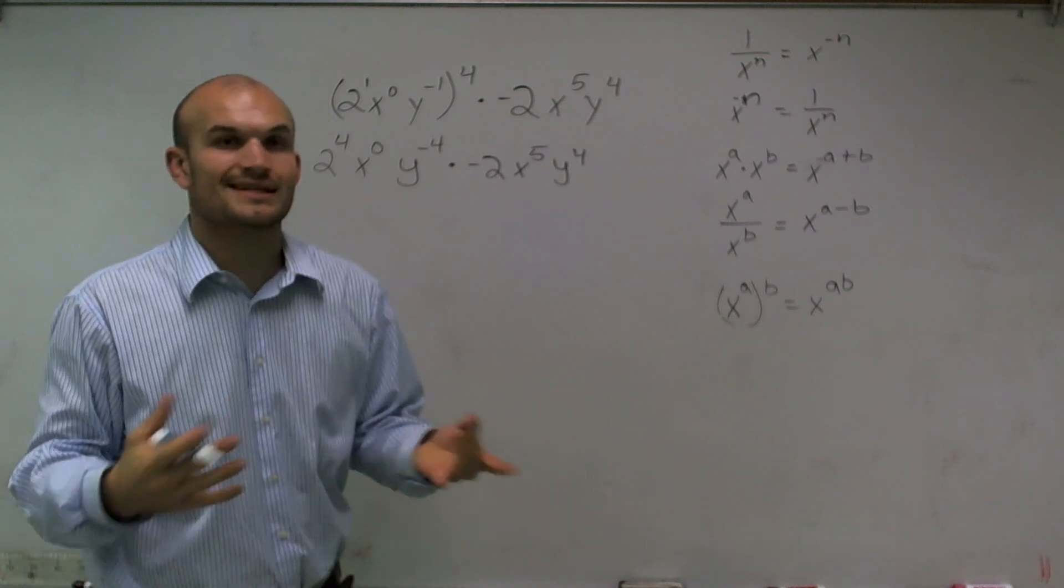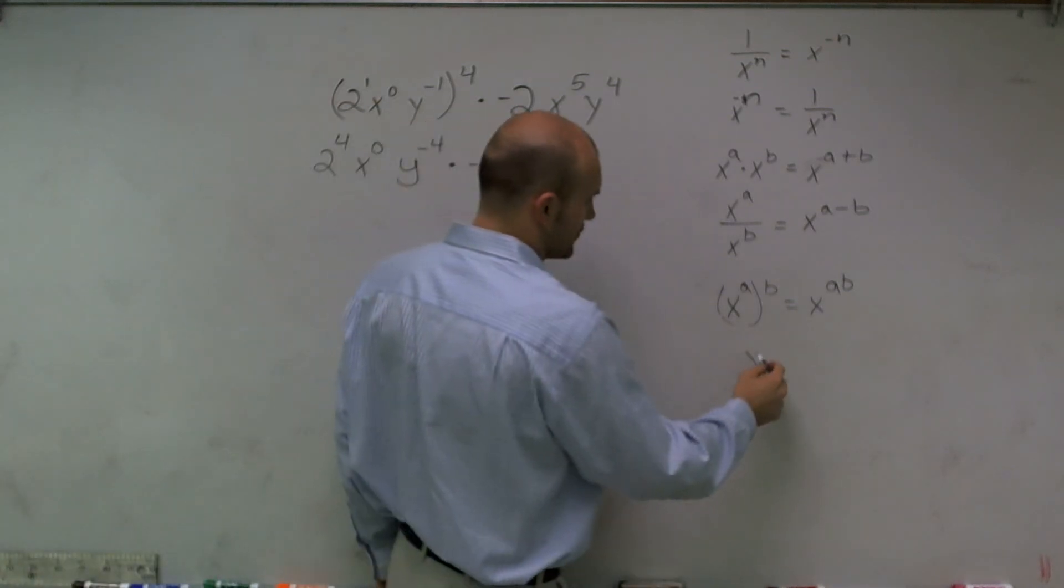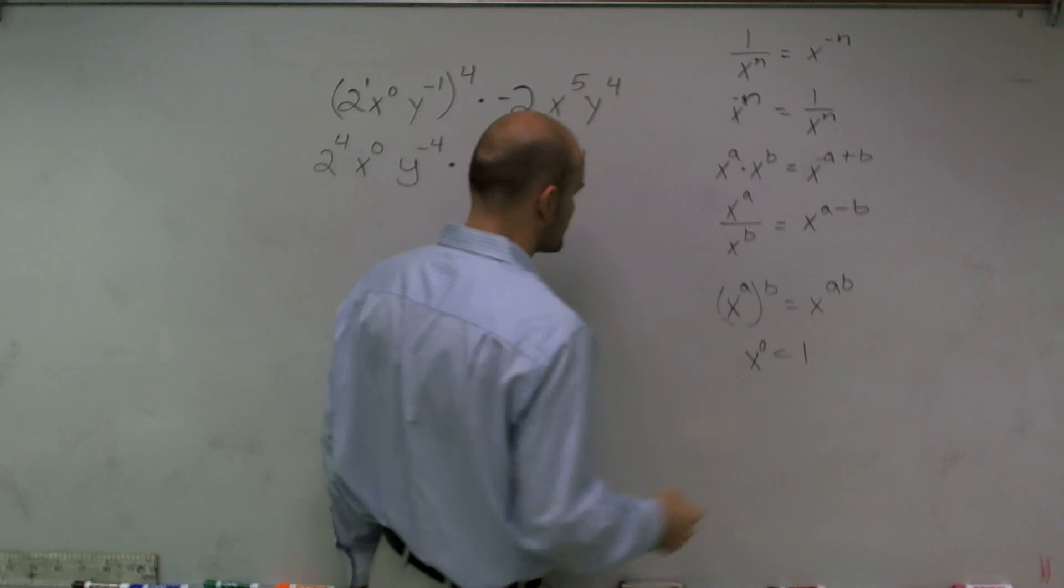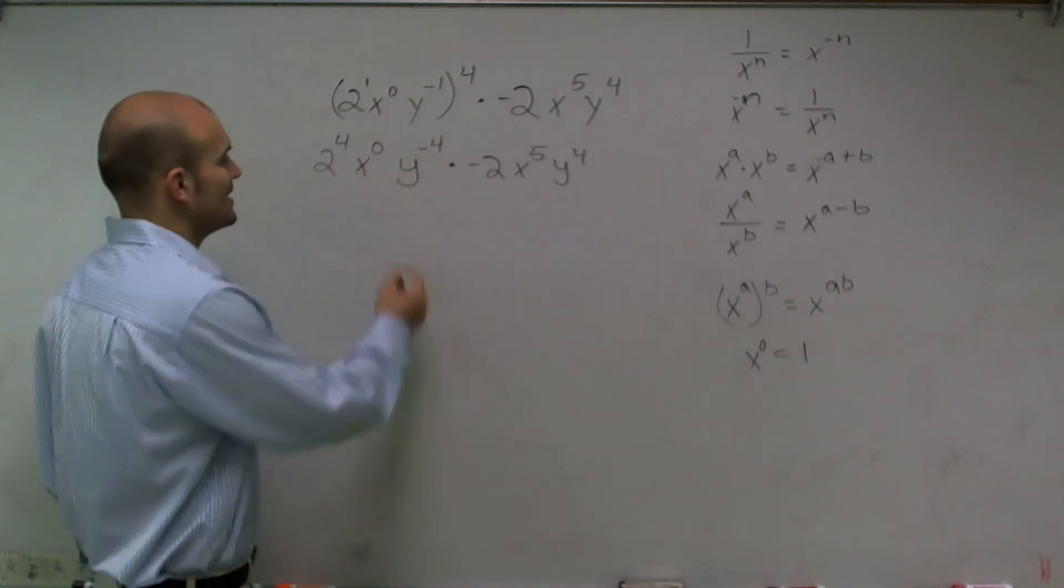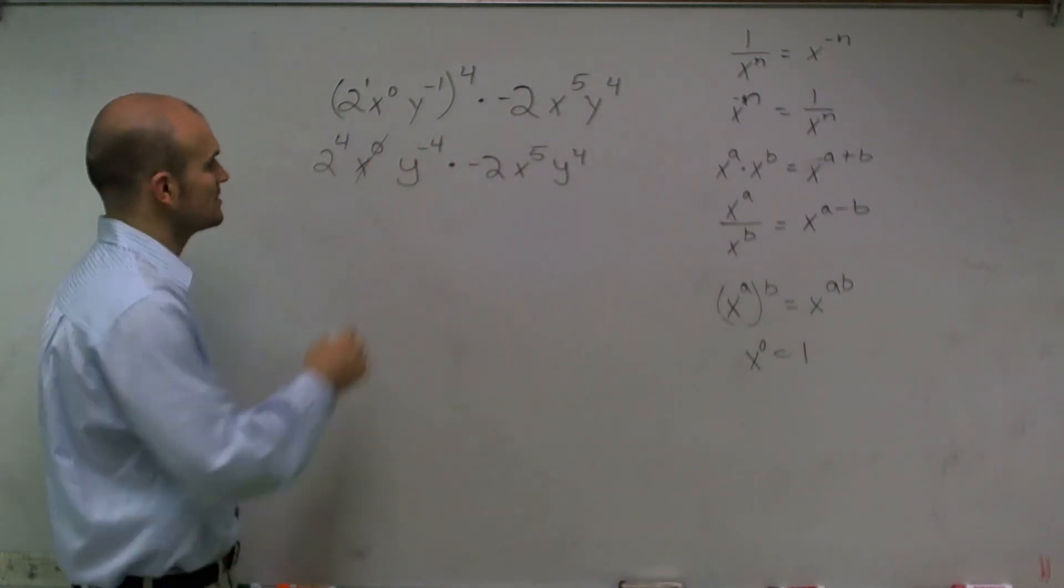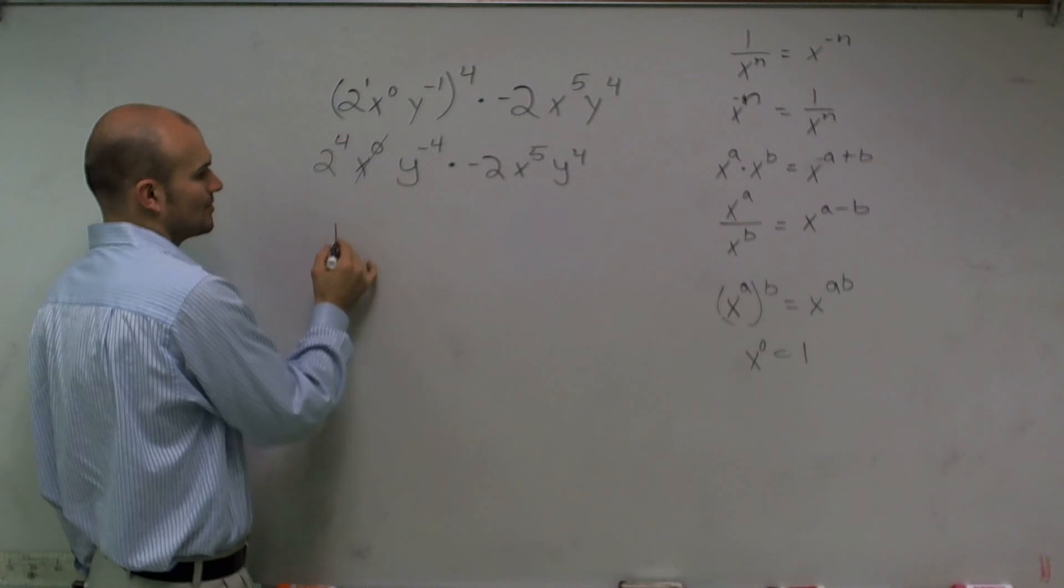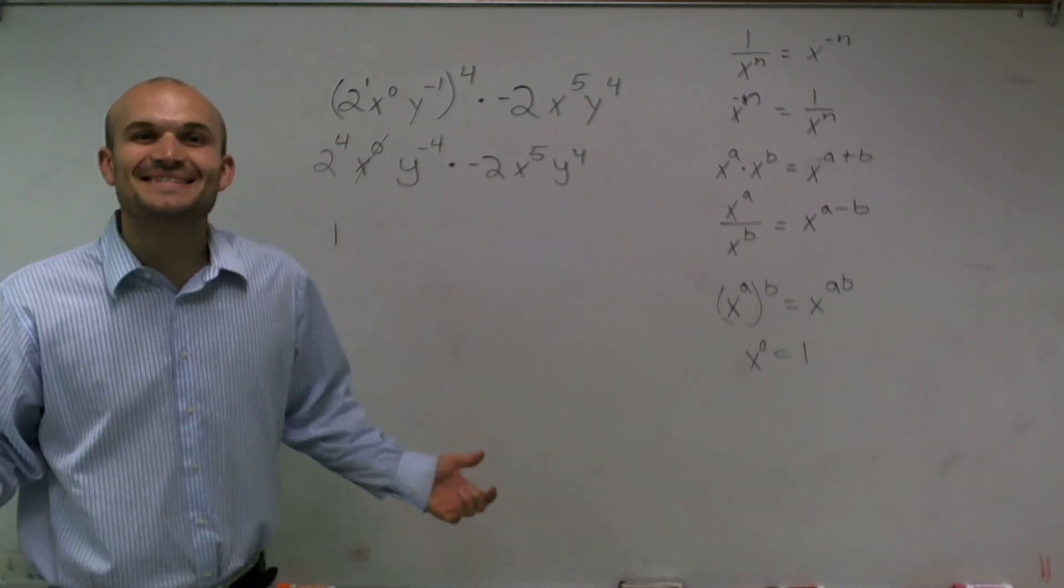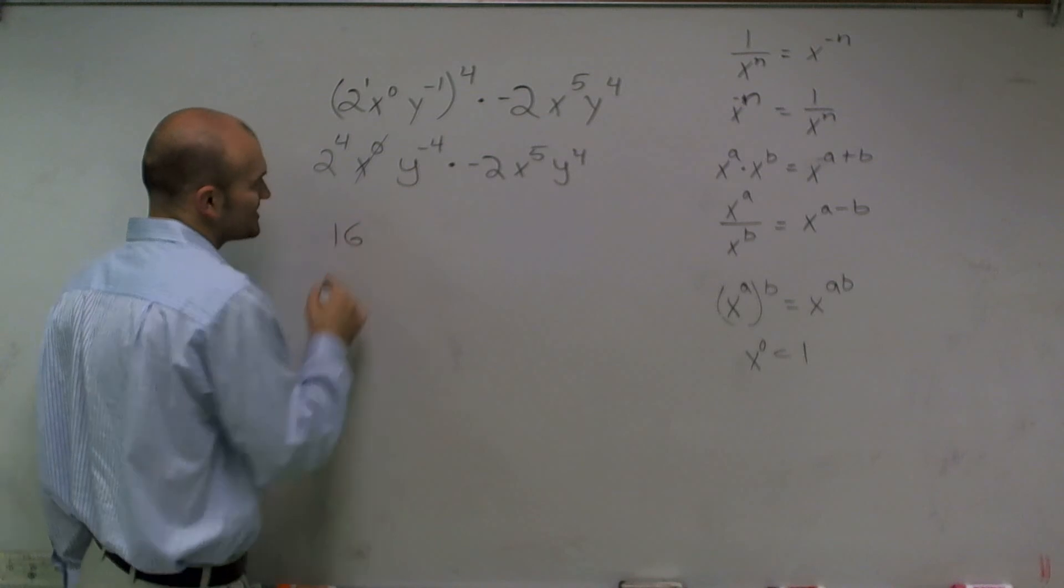Now, x raised to the 0 power is going to equal 1. That's actually another kind of rule we can talk about. So therefore, that's going to equal 1, which we can say just cancels out. 2 raised to the 4th power is going to give me 16.